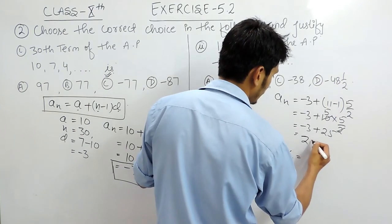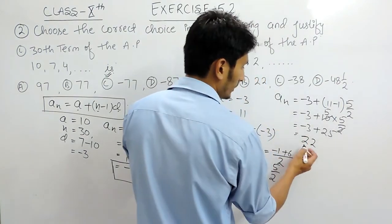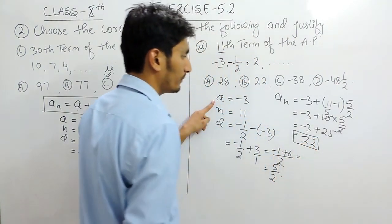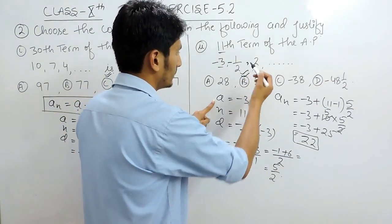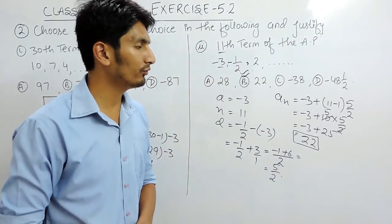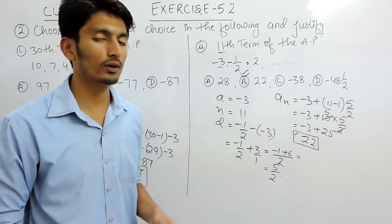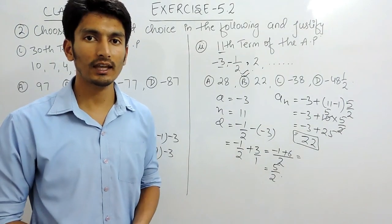And 25 - 3 is 22, so 22 would be the 11th term. So we can say that B would be the answer for this particular problem. Thank you.